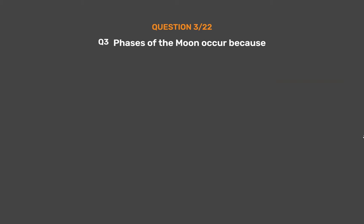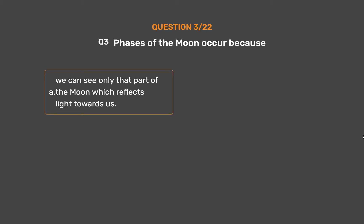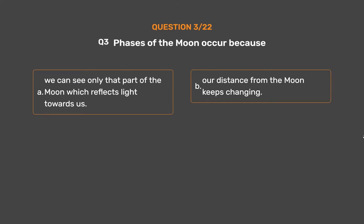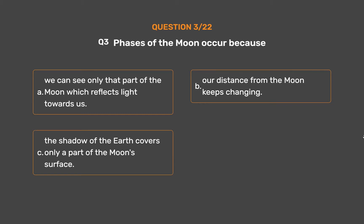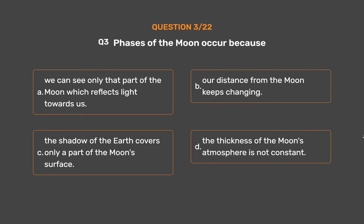Question number 3. Phases of the Moon occur because: Option A: We can see only that part of the Moon which reflects light towards us. Option B: Our distance from the Moon keeps changing. Option C: The shadow of the Earth covers only a part of the Moon's surface. Option D: The thickness of the Moon's atmosphere is not constant.